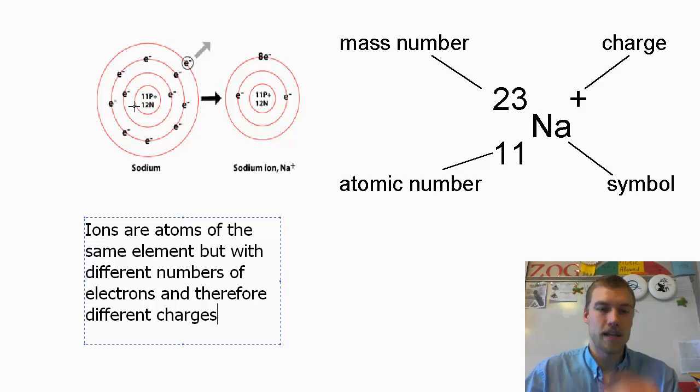So let's look at an example. Here we have sodium. Sodium has an atomic number of 11. So in an uncharged state as a neutral atom, it has 11 protons, and it has 11 electrons.